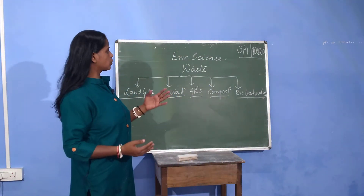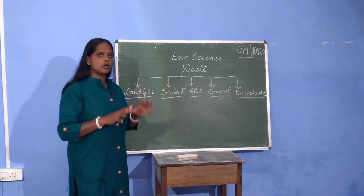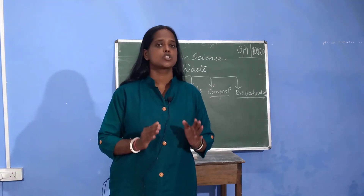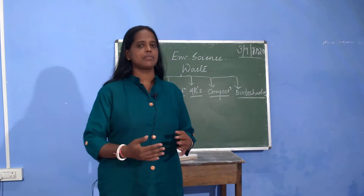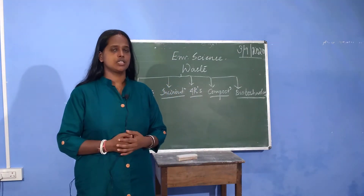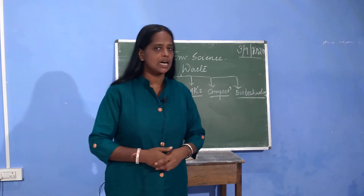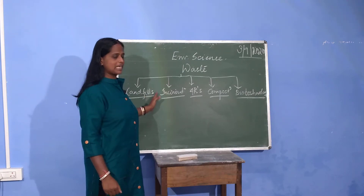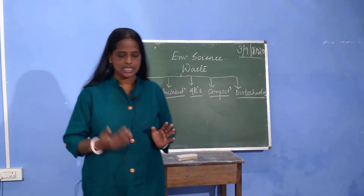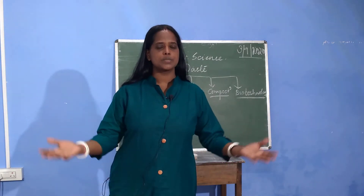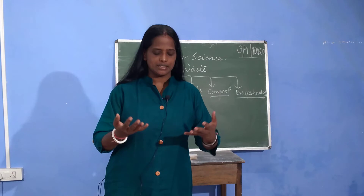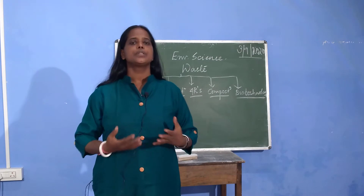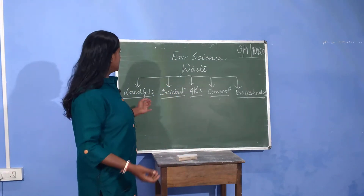Waste, as I told you, this chapter is very simple because it is divided into five parts: how we can tackle the problem of solid waste, how we can protect our environment, and how we can manage solid waste so that the environment does not get harmed. The first approach is landfilling — putting all the degradable waste inside a pit that is dug and covering it with soil, where the waste itself decomposes to form manure. That is sanitary landfill disposal.